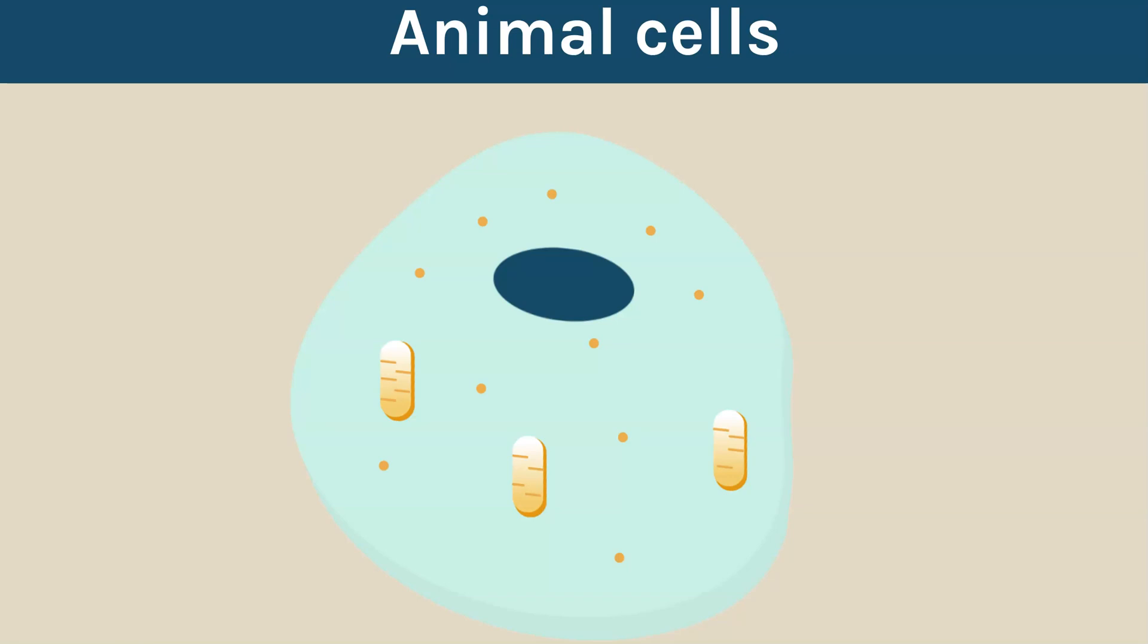Now we're going to go into more detail on the different structures and what their functions are in the animal cells and the plant cells. So let's start with an animal cell.